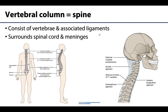The vertebral column is called many different names — sometimes the spine, or the spinal column. We're going to try to stick to 'vertebral column' for our purposes. It's more than just bone, because there are also joints formed by the articulations of the vertebrae, as well as ligaments. This column surrounds the spinal cord and associated nervous tissue, as well as the meninges.